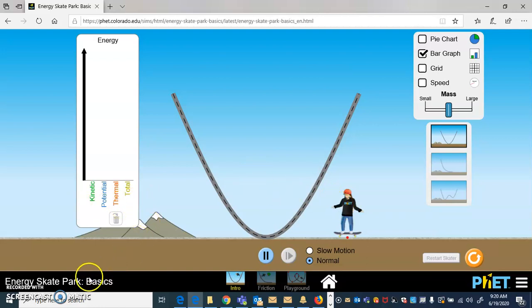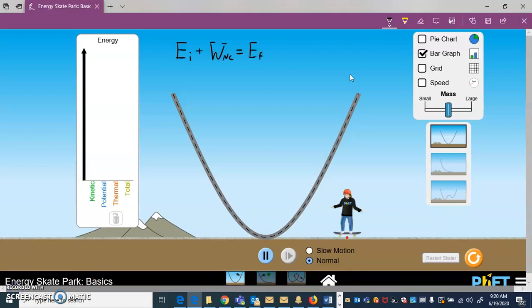I'm going to pause it for a moment just to write. So this is the governing equation for this chapter. The amount of initial energy plus the amount of work done on the system by non-conservative forces is equal to the amount of final energy.